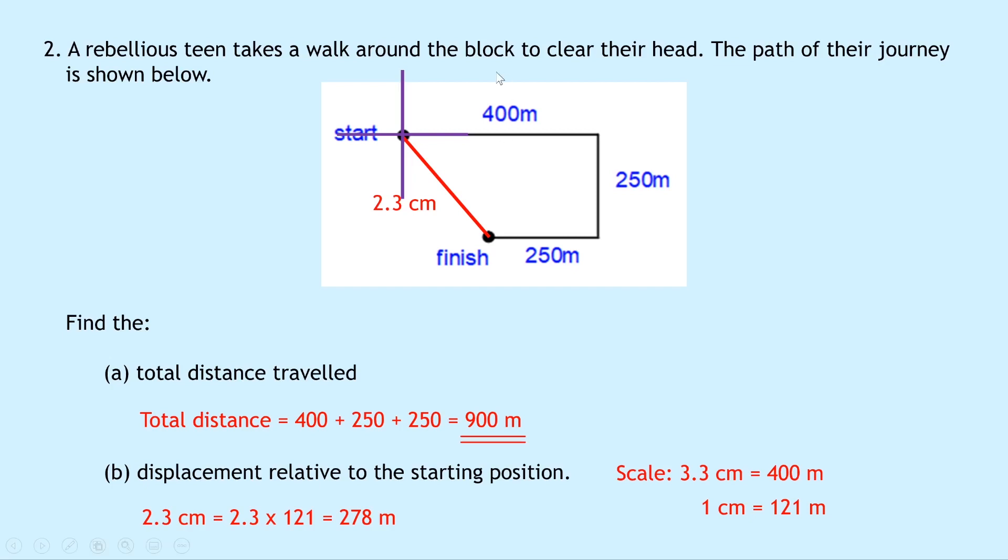And to find the direction as an angle, we're going to use bearings. So remember for bearings, we need to start at the north direction 000 and move in a clockwise direction until we reach the resultant vector, in this case the red line. So we're going to start off at 000 and measure with a protractor the angle going from 000 round to the resultant vector. And if you measure that with a protractor, you should find an angle of 142.